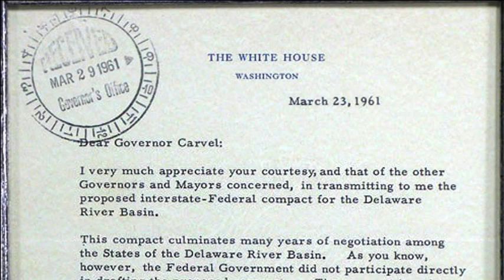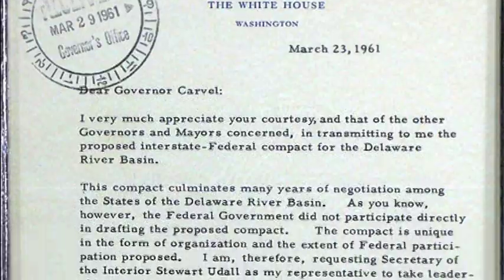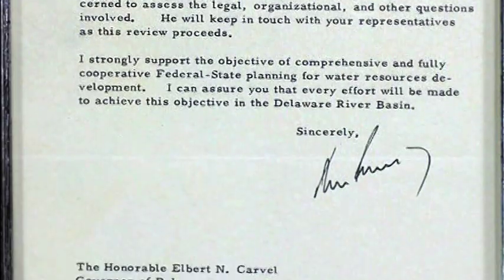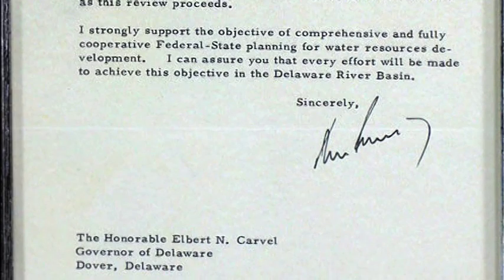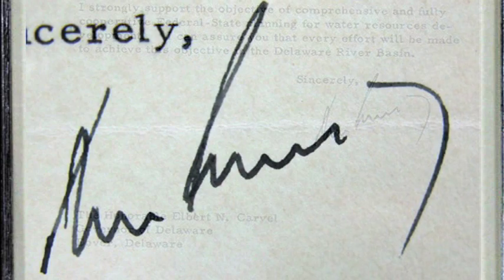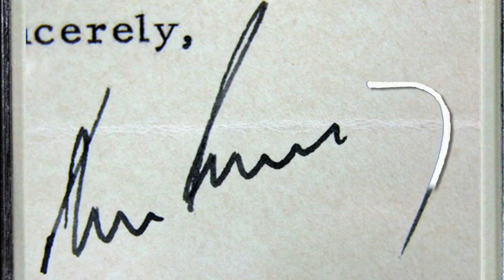Believe it or not, fewer secretarial signatures exist on presidential letters than in earlier periods of JFK's career. This authentic signature on White House letterhead reflects the speed, angle, and illegibility that we've come to expect in genuine examples. Also note JFK's perfect crescent formed by the disconnected Y.